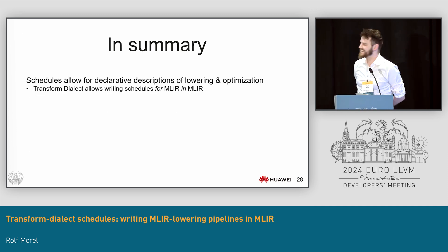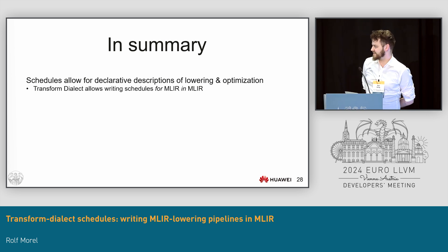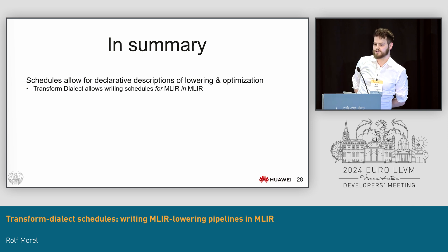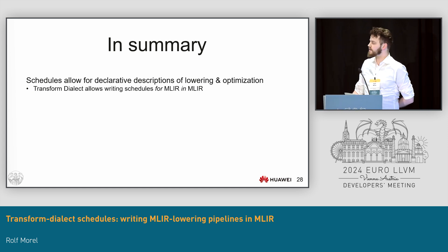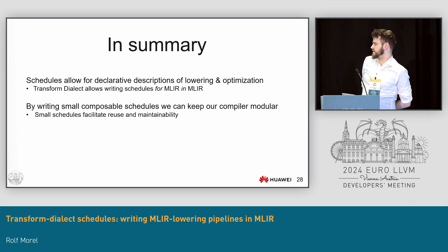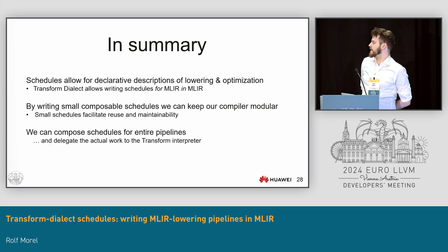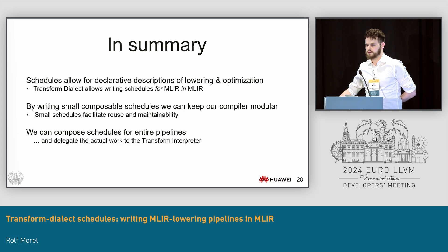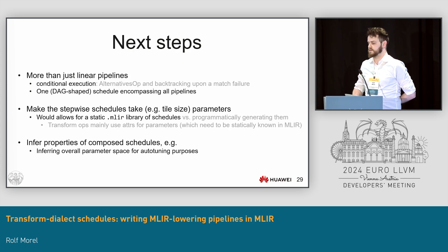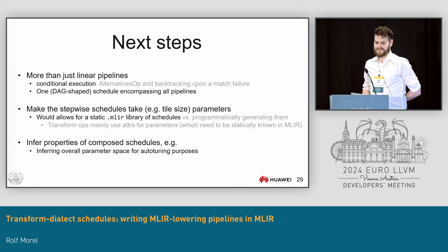In summary: schedules allow for declarative descriptions of lowering and optimization; the transform dialect is what allows us to do this inside MLIR. By writing small schedules, we can keep our compiler modular, and these small schedules facilitate reuse and maintainability. We can compose schedules for entire pipelines and have the transform interpreter do the actual work of the transformations.